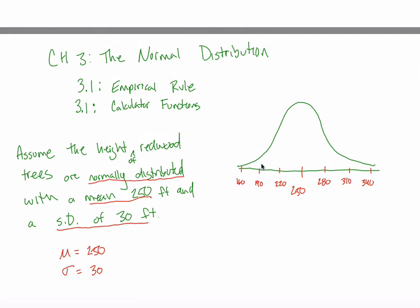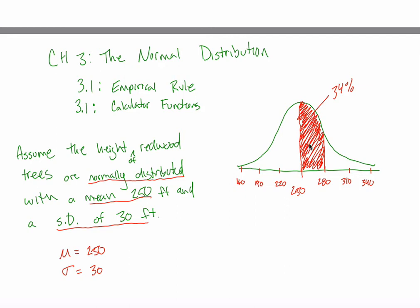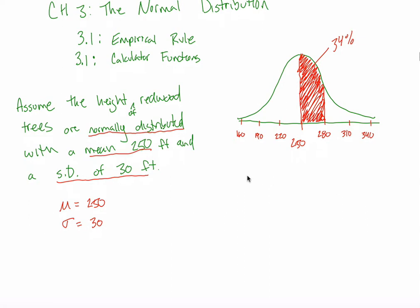What I want to teach you in this video is what the area underneath the curve represents. The way you're supposed to think about it is in terms of percentages. So if somebody drew a picture and shaded in from 250 to 280, I want you to understand what that shaded region represents. When we get into the empirical rule and the calculator functions, we'll learn how to calculate the area of that shaded region. What you'll see is this area is about 34 percent — about 34 percent of the total area underneath this curve lies between 250 and 280.